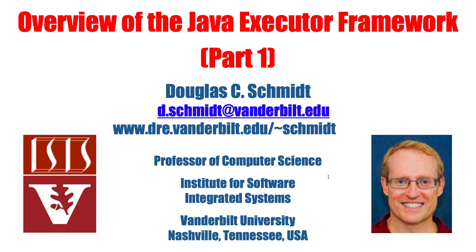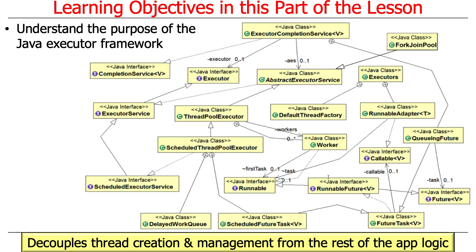What we're going to do now is switch gears and talk about something called the Java executor framework. As you can see from this subset of the classes in the Java executor framework, there's a lot of stuff here. We'll cover most of these by the time we're done — not all today of course. In a nutshell, its purpose is to decouple thread creation and management activities from all the rest of the application logic.